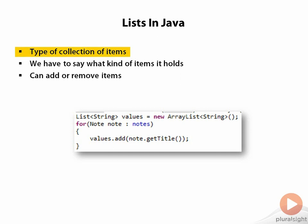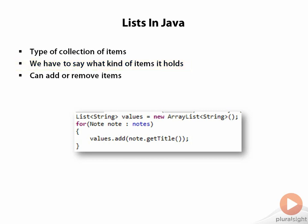Lists in Java actually belong to a bigger concept called collections, but we aren't going to go into all the details of collections in this module. We're going to keep things simple and just focus on lists. When we declare a list in Java, we typically say what kind of items it can hold. It's possible to create a list that can hold any kind of item, but it's not quite as useful as being specific.